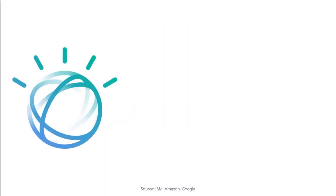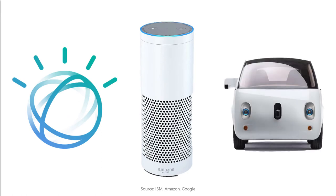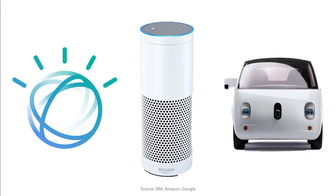On the other hand, many of you will think of modern AI like IBM's Watson, Amazon Alexa, or Google's self-driving car. This is what we call artificial narrow intelligence or narrow AI.